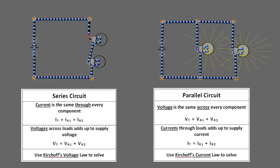So one characteristic of a parallel circuit is the voltage across R1 is the same as the voltage across R2, which is the same as the voltage across the battery.